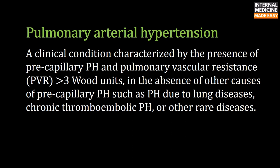Pulmonary arterial hypertension is a clinical condition characterized by the presence of pre-capillary pulmonary hypertension and pulmonary vascular resistance of more than 3 Wood units, in the absence of other causes of pre-capillary pulmonary hypertension such as pulmonary hypertension due to lung diseases, chronic thromboembolic pulmonary hypertension, or other rare diseases.